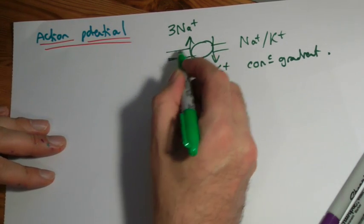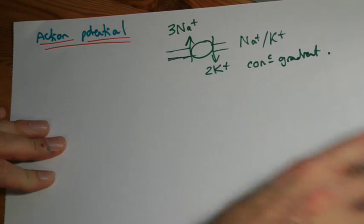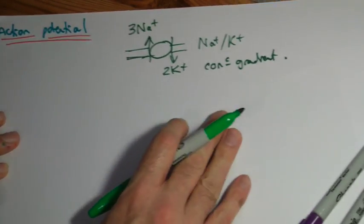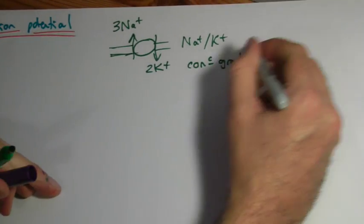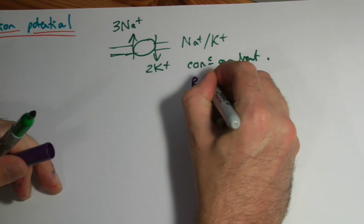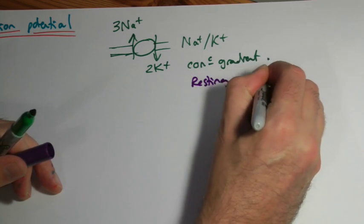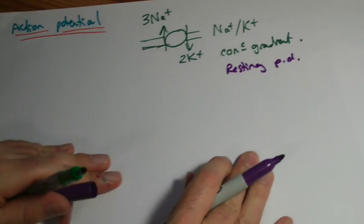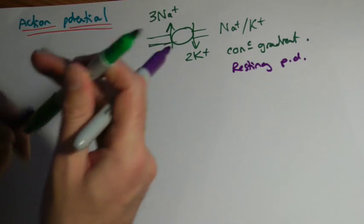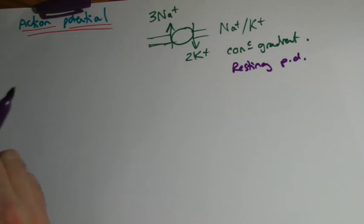But this thing here helps to maintain, and there's going to be lots of potential differences here I'm afraid. There's quite a few to remember. But this is maintaining what we call the resting potential. I'm just going to write PD, potential difference. So if you're writing out, that's an acceptable abbreviation.